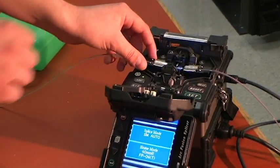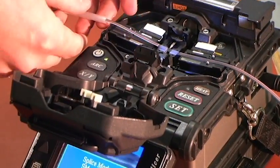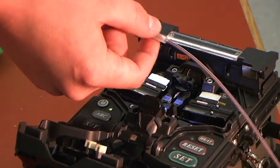With the fiber holder still in just so we don't break the fiber, you'll want to unclamp the fiber on both sides. Slide the fiber holder into place.